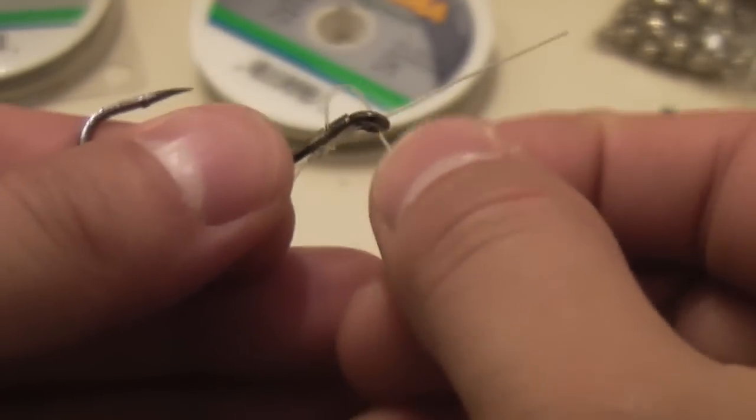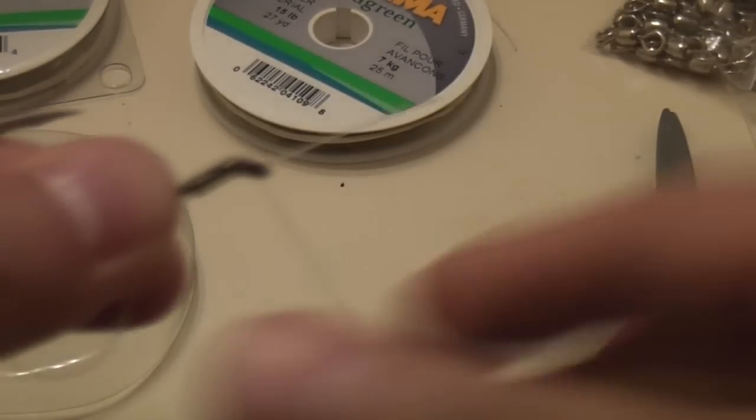And then this loop here, which I'll constantly be able to open up and then cinch it down again because this goes to the swivel, that's where I'm going to be putting in my salmon roe.